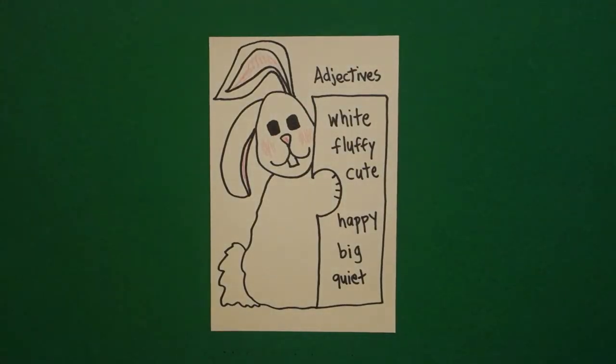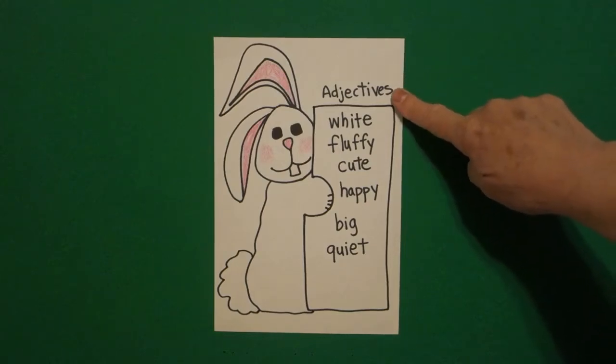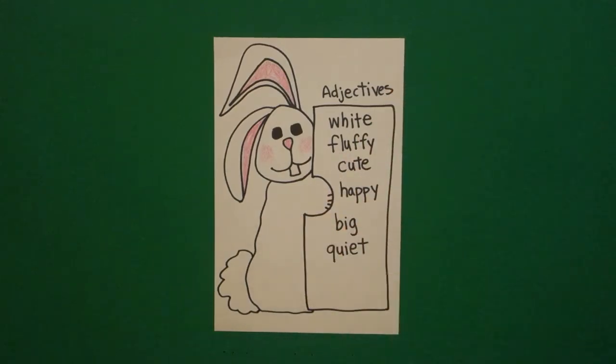Let's see what he looks like all colored in. Here's my bunny all colored in. And using my adjectives to describe him. He is a white bunny. He is a fluffy bunny. He is a cute bunny. He is a happy bunny. He is a big bunny. And he's a quiet bunny. Okay, bye bye.